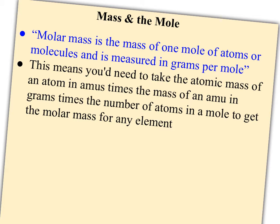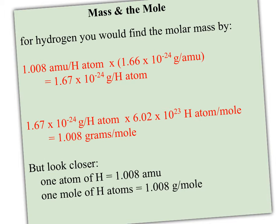If you want to find the molar mass, we would need to take the atomic mass of an atom in AMU times the mass of an AMU in grams, 1.66 times 10 to the minus 24th, times the number of atoms in a mole, 6.02 times 10 to the 23rd. Let's take a look at that for hydrogen. Hydrogen has an atomic mass of 1.008 AMU, and one AMU weighs 1.66 times 10 to the minus 24th grams. So when I multiply that, I see that one hydrogen atom has this little teeny mass of 1.67 times 10 to the minus 24th grams. Now if I wanted the molar mass, I can take the mass in grams for hydrogen times the number of atoms in a mole, and I get 1.008 grams per mole.